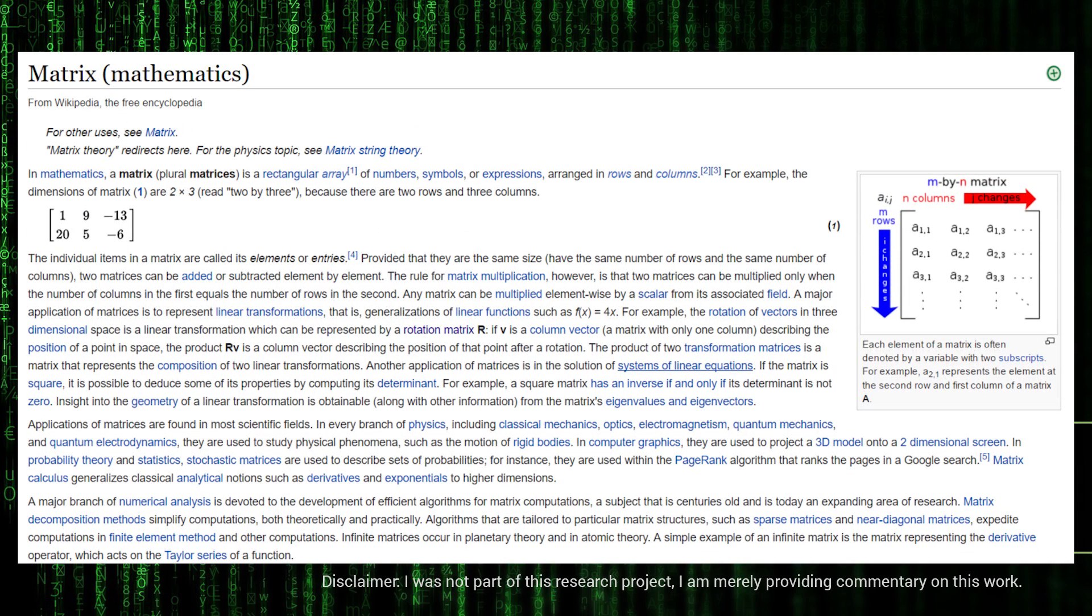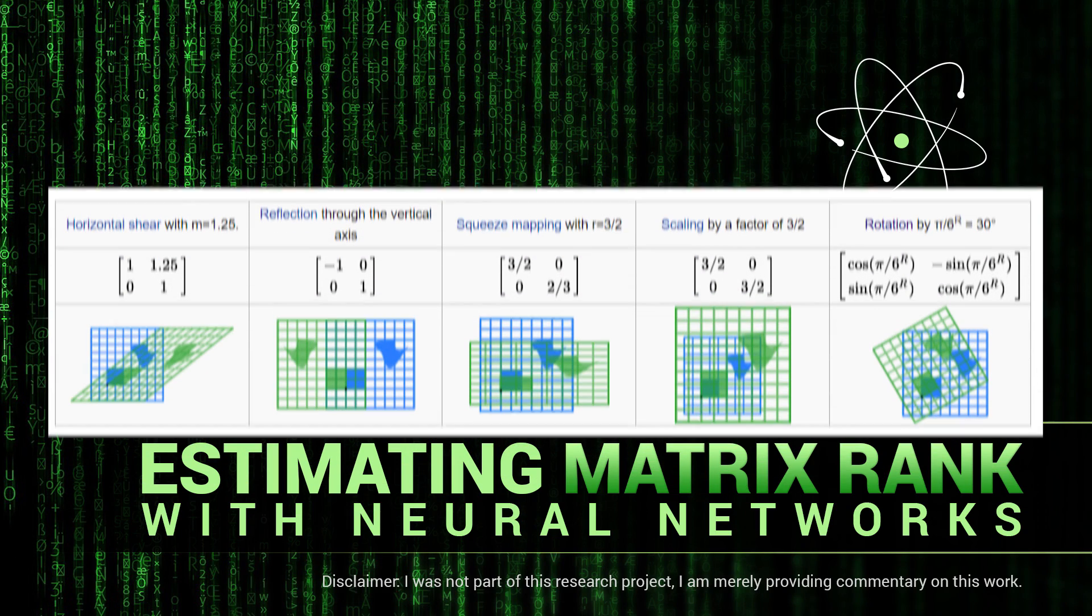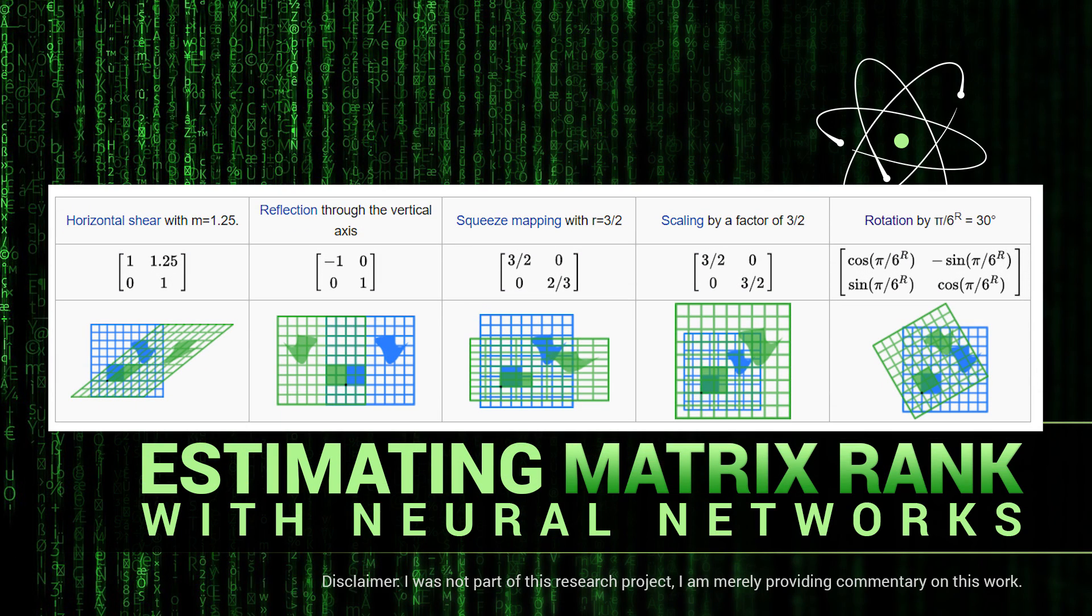In mathematics, a matrix is a rectangular array in which we can store numbers and symbols. Matrices can be interpreted in many ways, for instance, we can think of them as transformations. Multiplying a matrix with a vector means applying this transform to the vector, such as scaling, rotation, or shearing. The rank of a matrix can be intuitively explained in many ways.